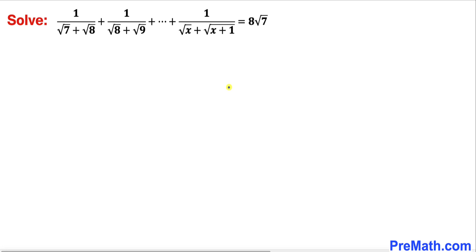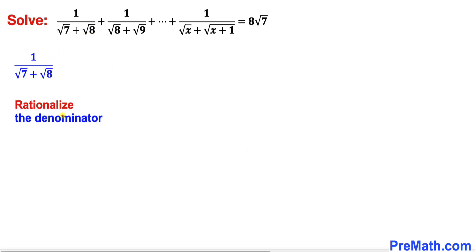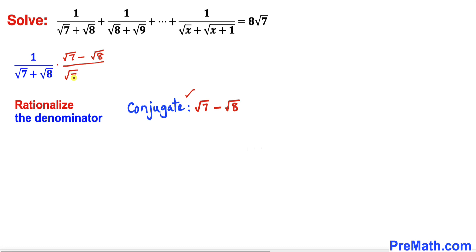Let's get started with the solution. Let's focus on this very first term: 1 divided by square root of 7 plus square root of 8. We are going to rationalize this denominator by multiplying its conjugate, which is square root of 7 minus square root of 8, on both sides. So we write square root of 7 minus square root of 8 divided by square root of 7 minus square root of 8.